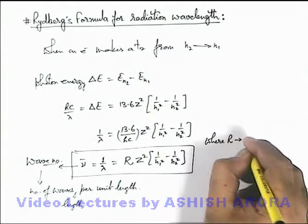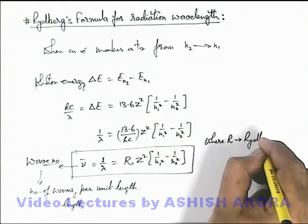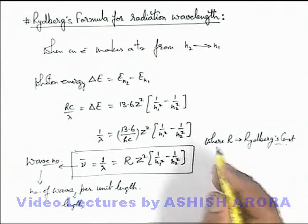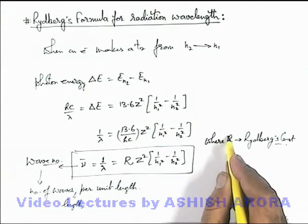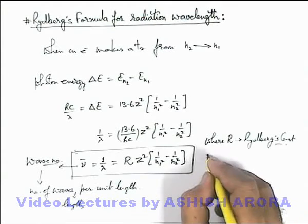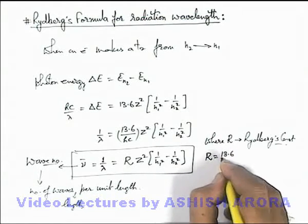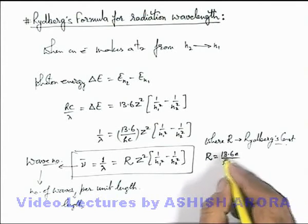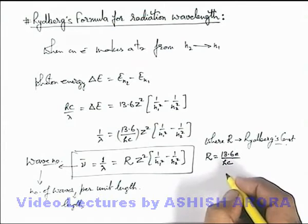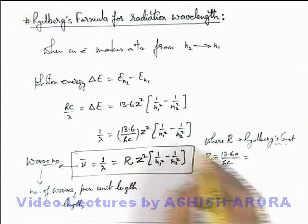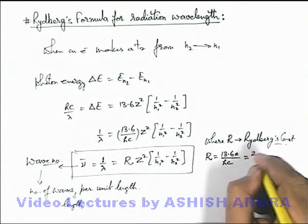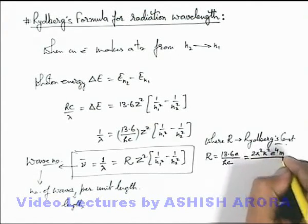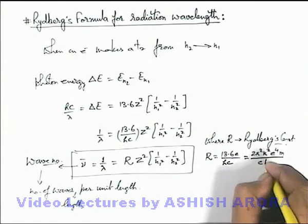Where R is written as Rydberg's constant, which we already studied in the analysis of Rydberg unit of energy. And the value of R here we can write as 13.6 eV by hc, or expressionally we can write as 2π² k² e⁴ m by h squared, so already hc is there, this will be ch cubed.